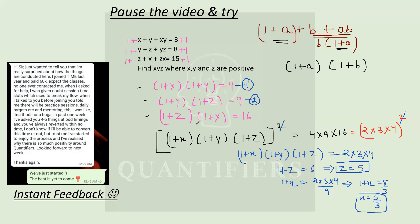Similarly, using the third equation: one plus Z into one plus X is 16. So this product is 16. I'll get one plus Y equal to 24 divided by 16, which gives one plus Y equal to three by two. From here, the value of Y will be equal to three by two minus one, that is one by two.